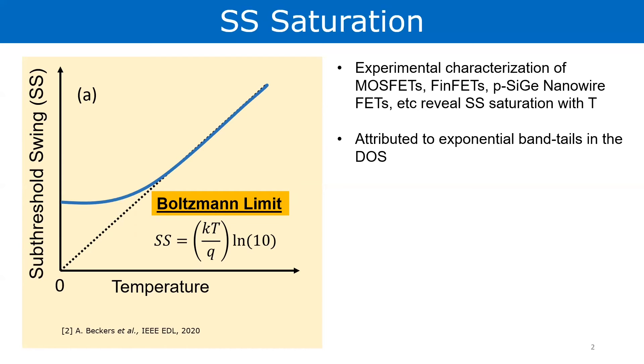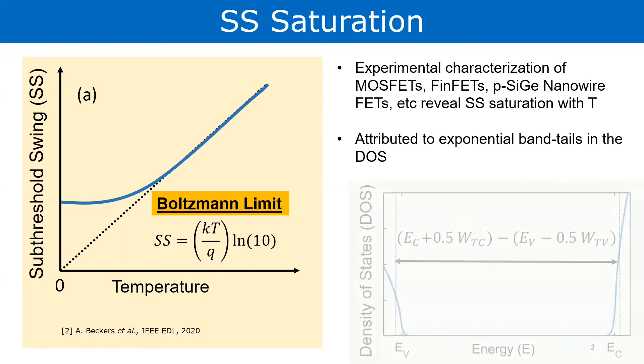Finally, Dr. Bohuslavsky and Beckers attributed this to the exponential band tails of the density of states in the band gap. Conventionally, we are taught that the 3D density of states is proportional to the square root of the energy and it terminates at EV and EC as shown here.